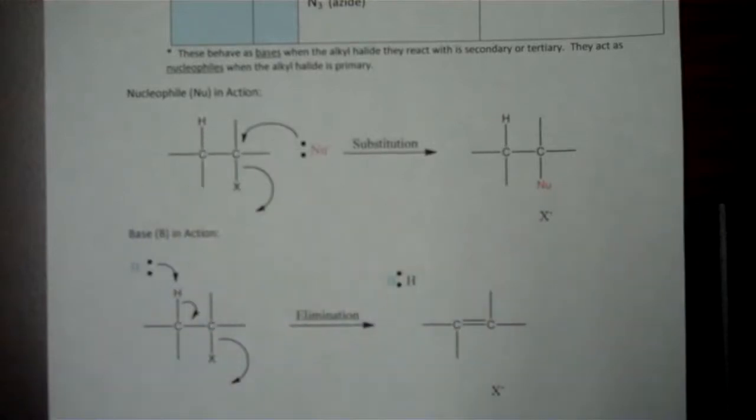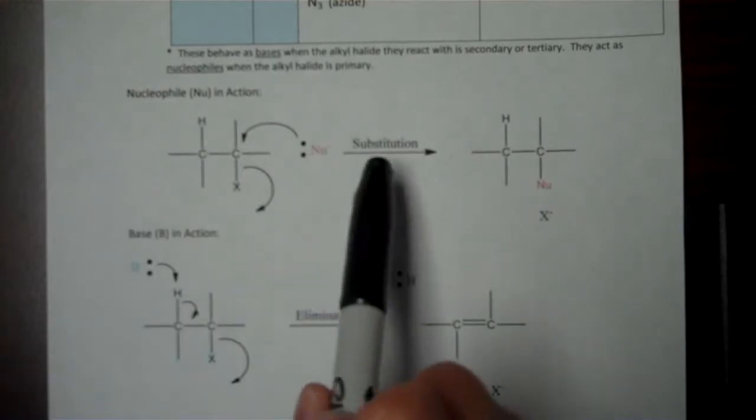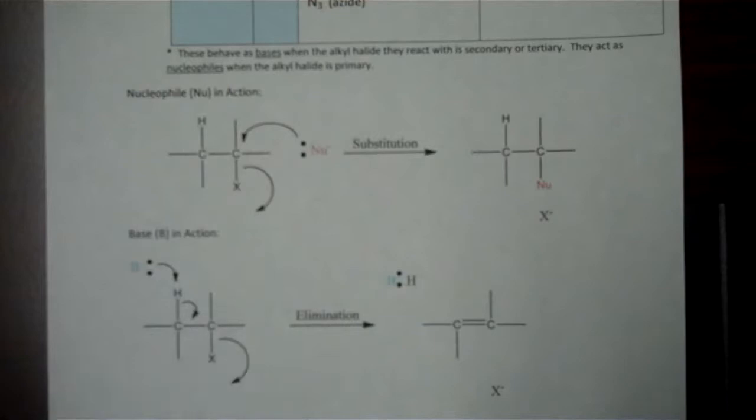Generally, we don't want both of these reactions happening. We want something either to behave as a nucleophile and undergo substitution, or in other cases, we may prefer it to behave as a base. Luckily, we can vary the reaction conditions to make one or the other of these more likely.